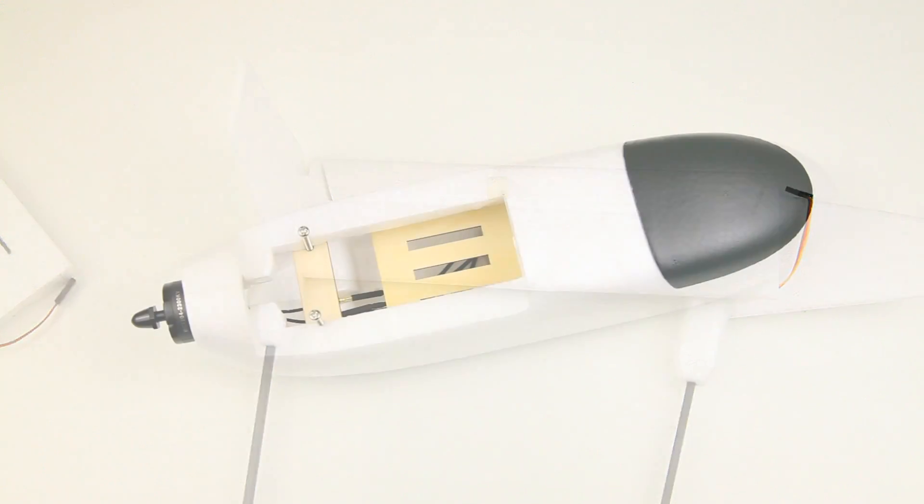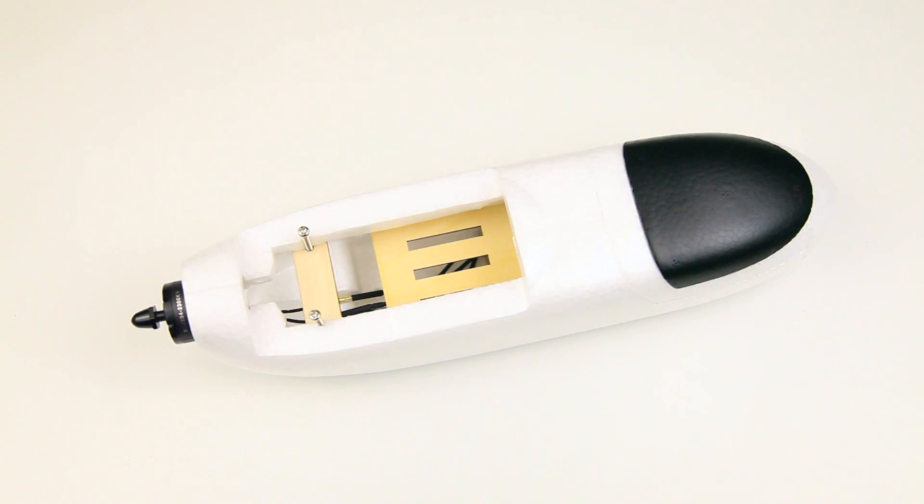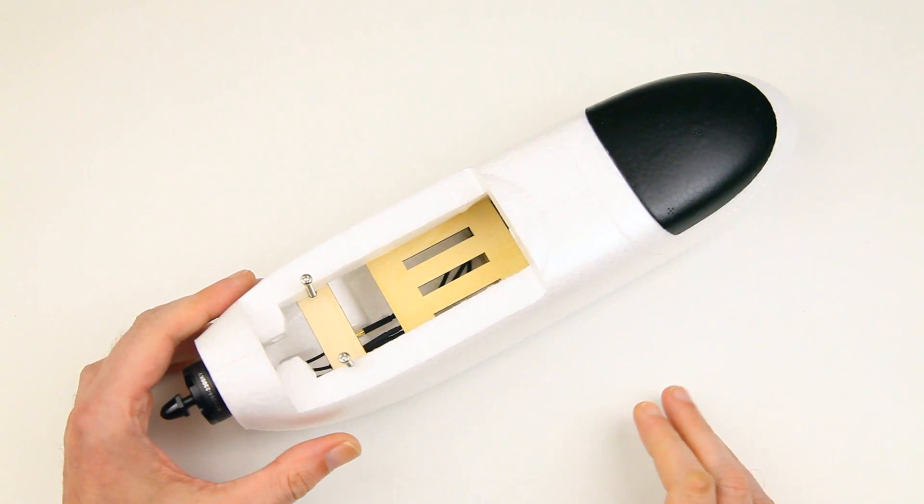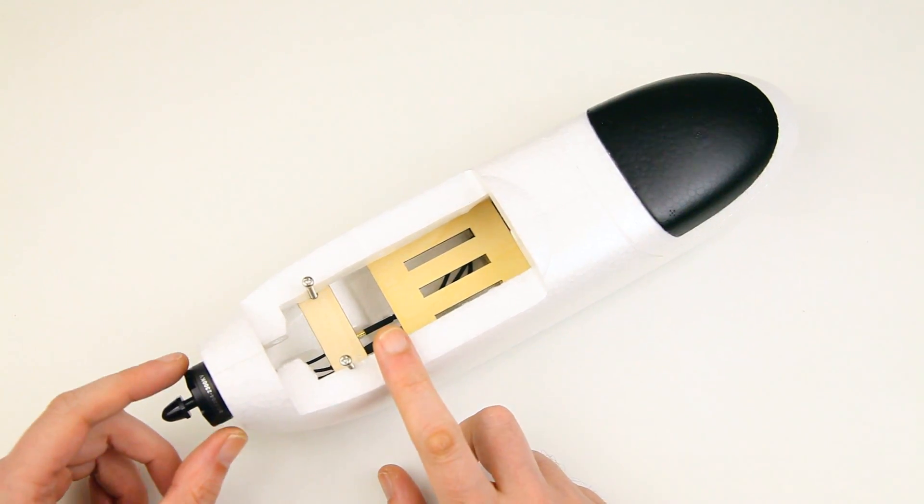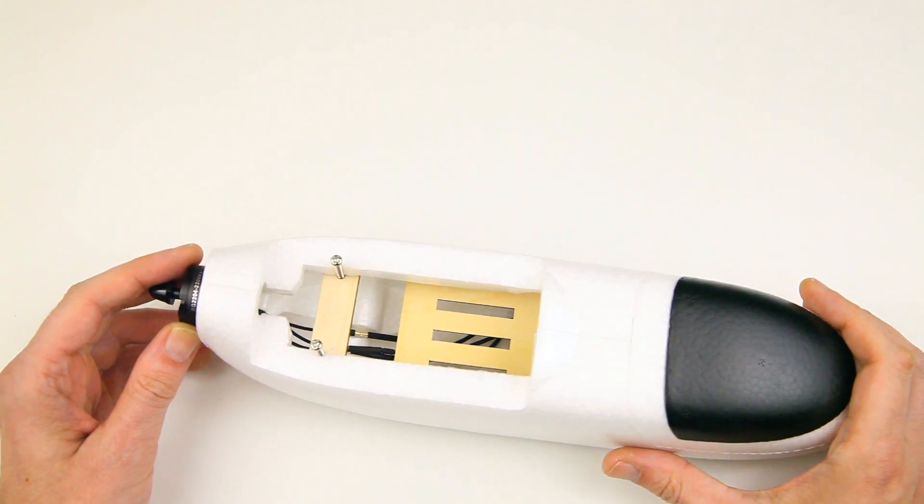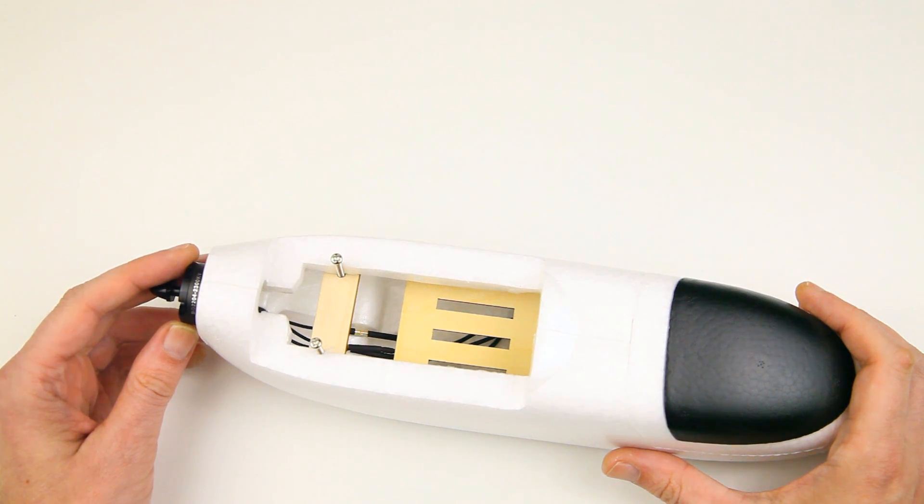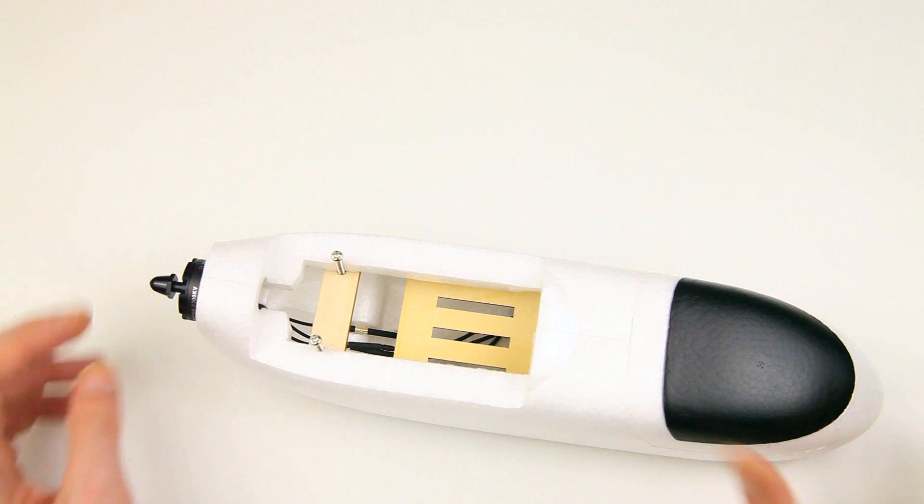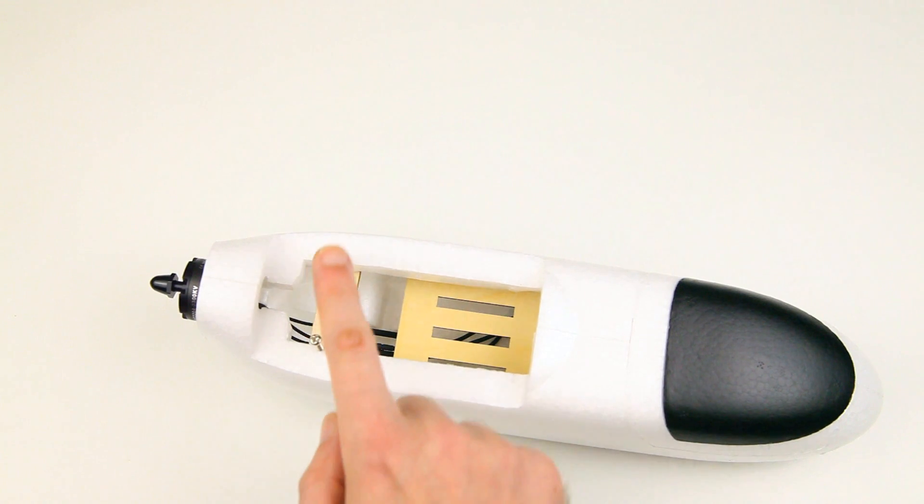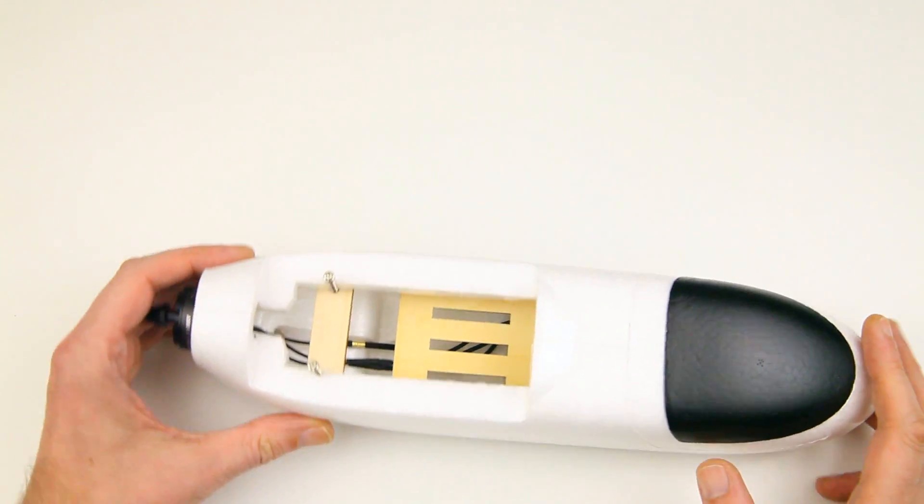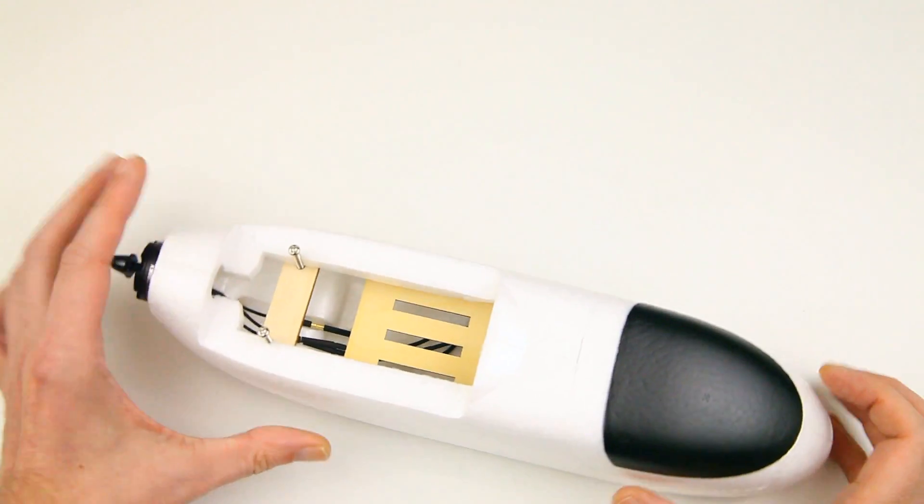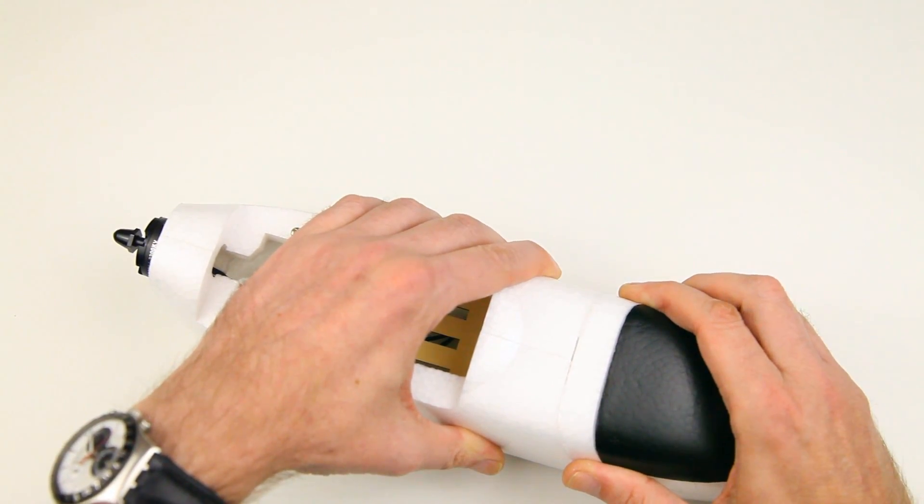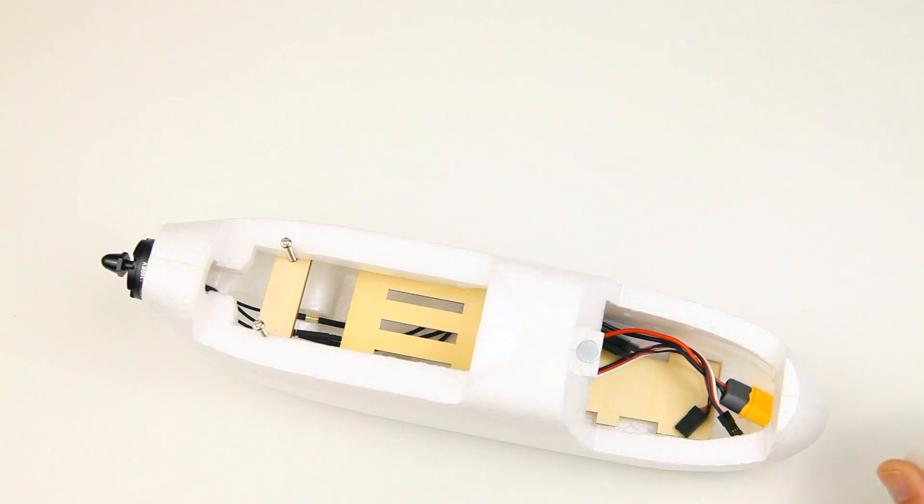Then there's the fuselage, which is very small again. Motor is already installed - it is a 2204, 2300 KV motor, a quadcopter motor more or less. It also has the two bolts that hold the wings on it already.